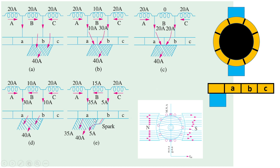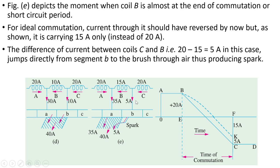Ideally, when the brush stops contact with segment B and is fully in contact with segment A, the current in coil B should be 0 and the current in coil C should be 20 A — the entire 40 A must flow from coils A and C through segment A to the brush, just as it previously flowed through segment B. However, looking at the figure depicting the moment when coil B is almost at the end of the commutation period, the brush is about to leave segment B. For ideal commutation the current should have reversed by now, but instead it is carrying only 15 A instead of the required −20 A.